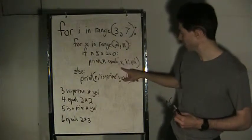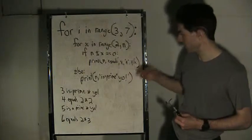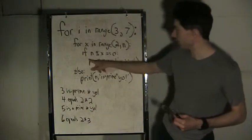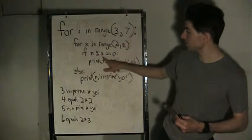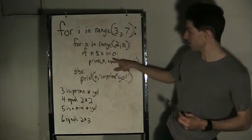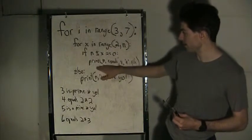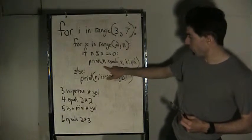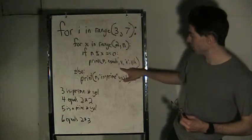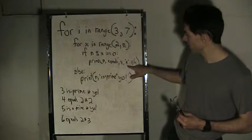4 mod 2 is going to have a remainder of zero, so then it prints '4 equals 2 times 2', which is this line right here. Or if it's 6...